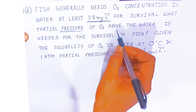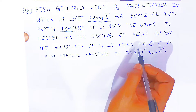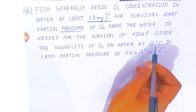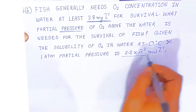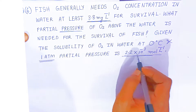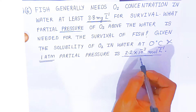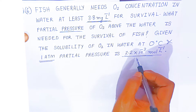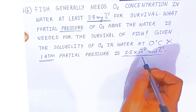If the solubility is given, students, you have to find the pressure of oxygen for survival of fish. Now from the data, the solubility of oxygen at 0°C is 2.2 × 10⁻³ mol per dm³, and at that time the pressure is 1 atmospheric pressure. So from this data students you have to find the Henry's law constant.